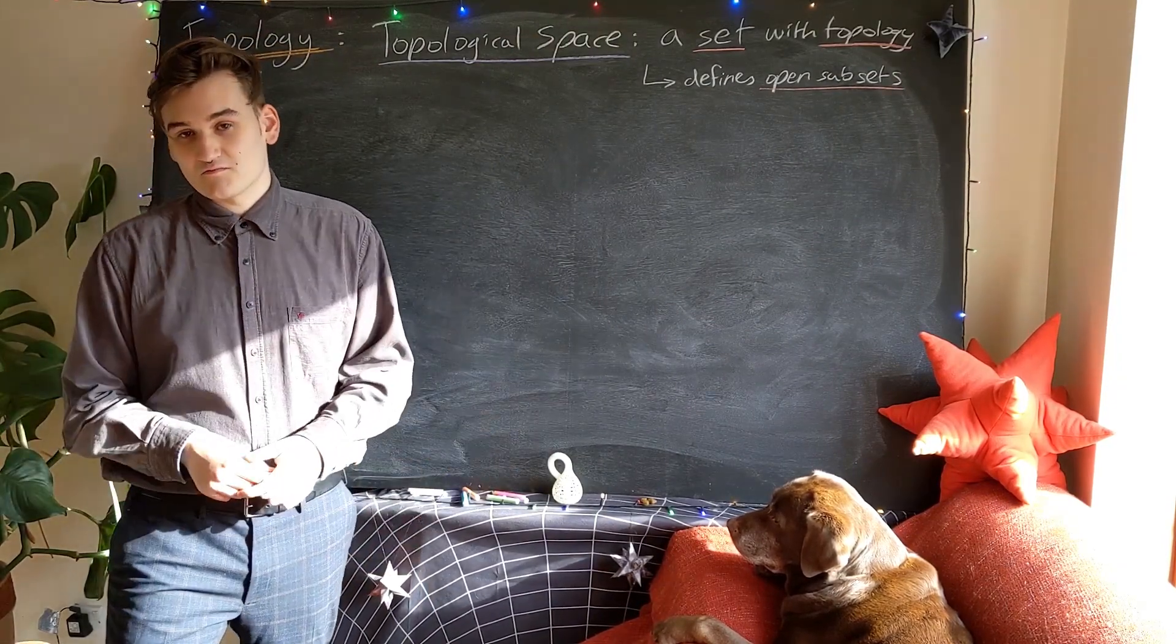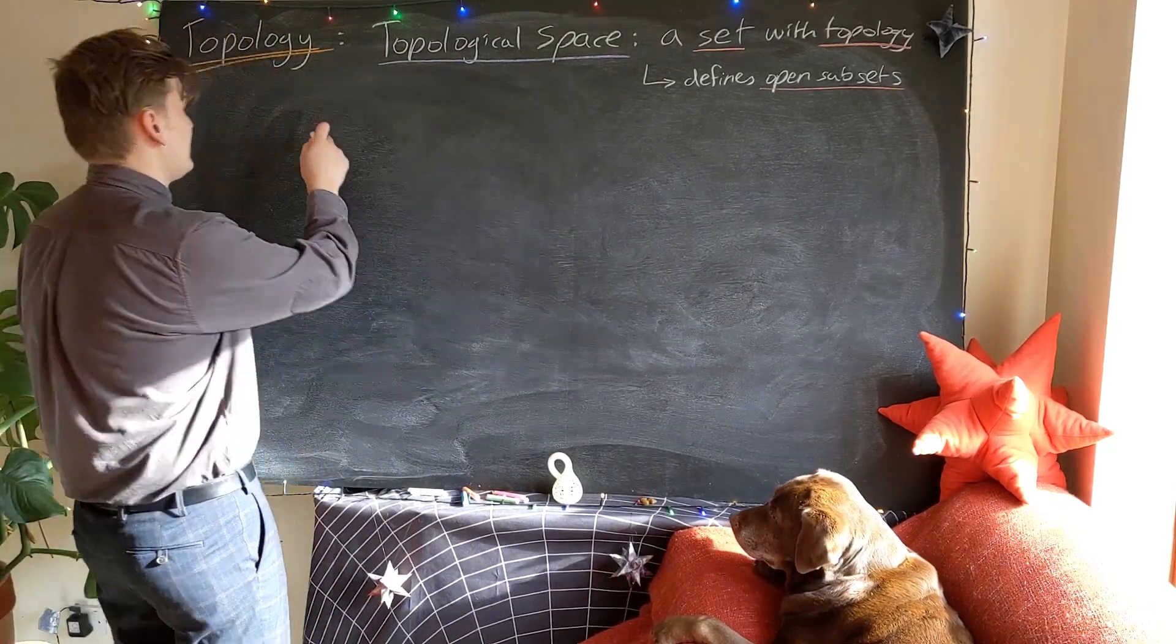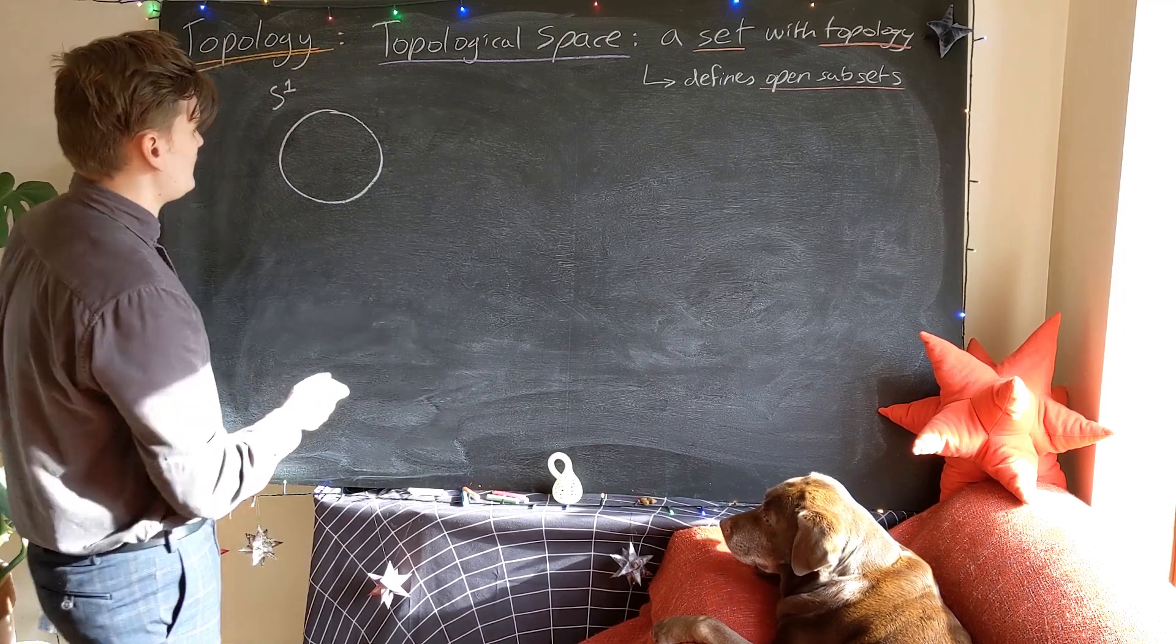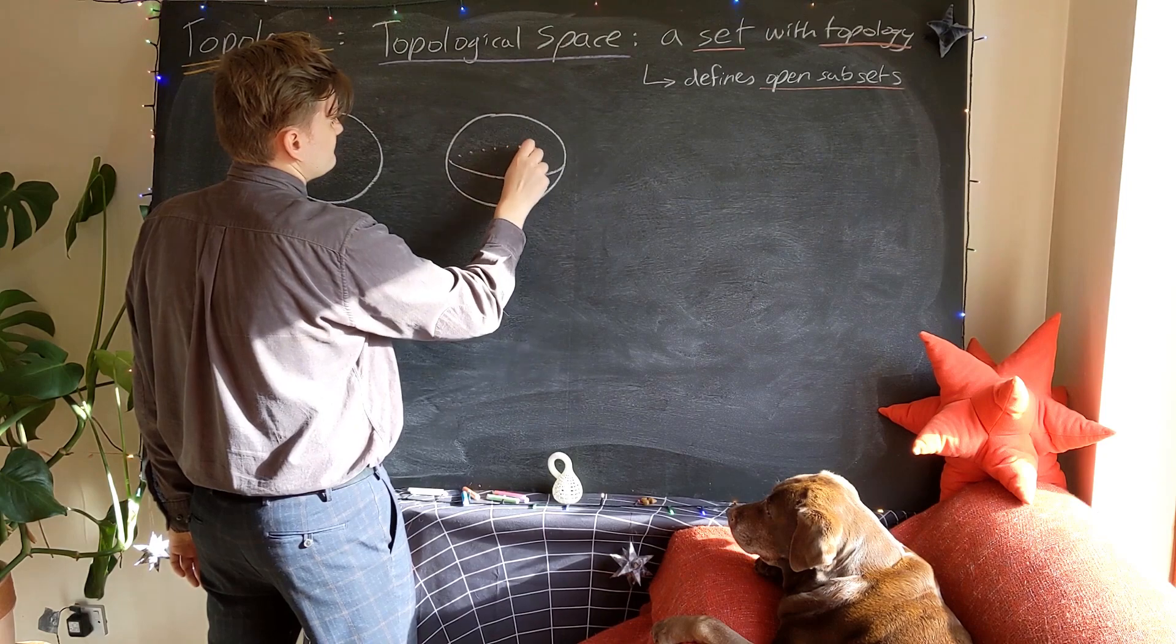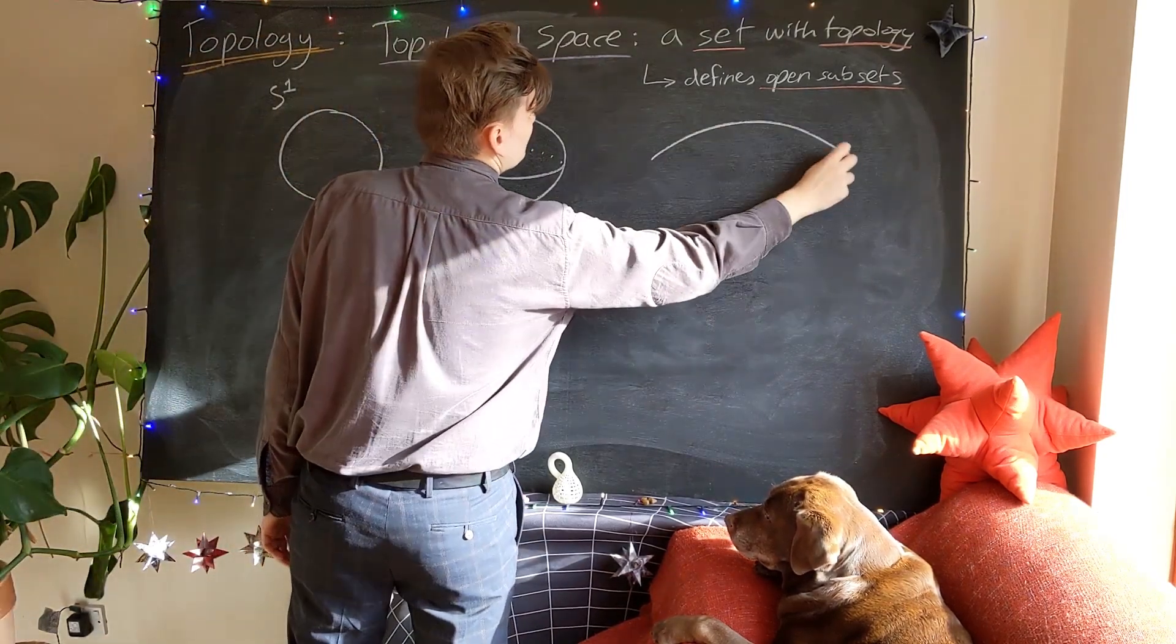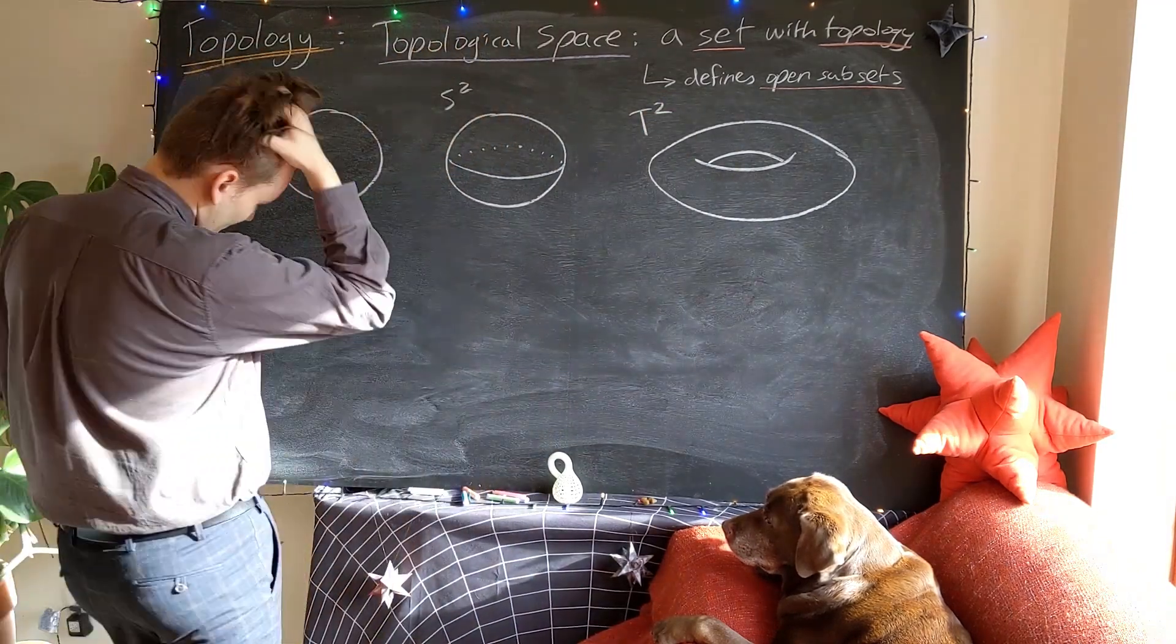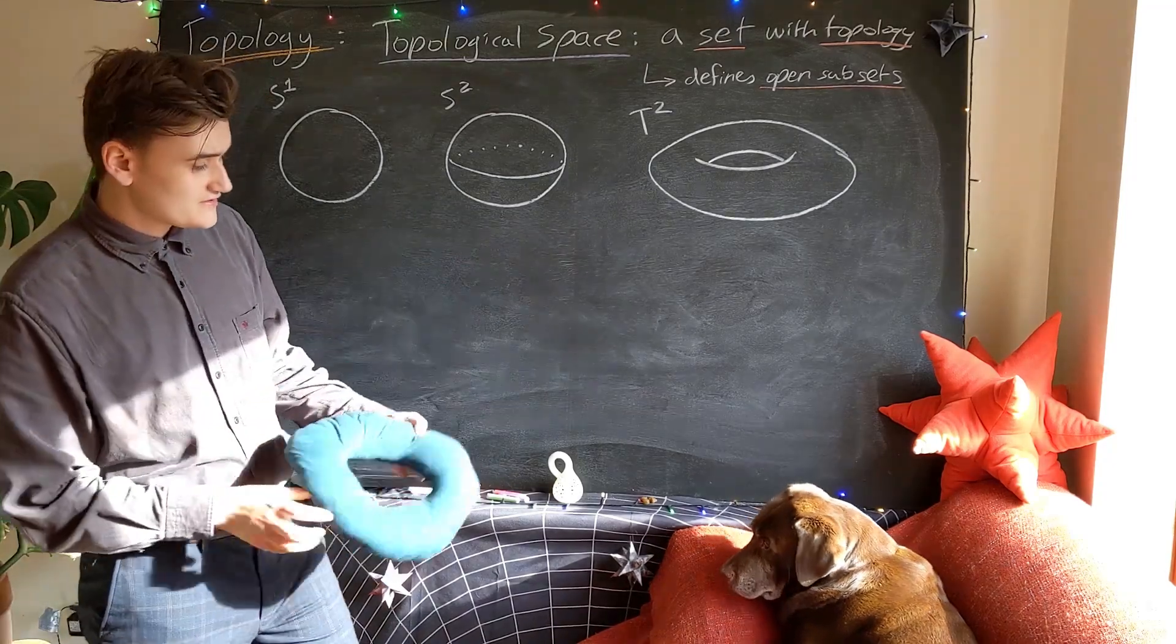Now let's see some examples of objects which are topological spaces. Something like the circle, which is called S1. Something like the sphere, which is S2. And then something like the torus, T2. So I have some examples of topological spaces here. This would be a torus.